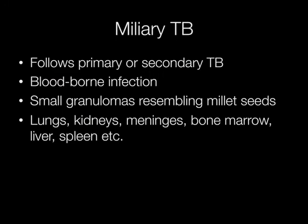Miliary TB may occur in individuals who have reduced resistance to TB. It may follow primary or secondary TB. The organisms are blood borne and spread throughout the body producing granulomas that resemble millet seeds, hence the term miliary. There are many sites where miliary TB may be found including the lungs, kidneys, meninges, bone marrow, liver, spleen, etc.